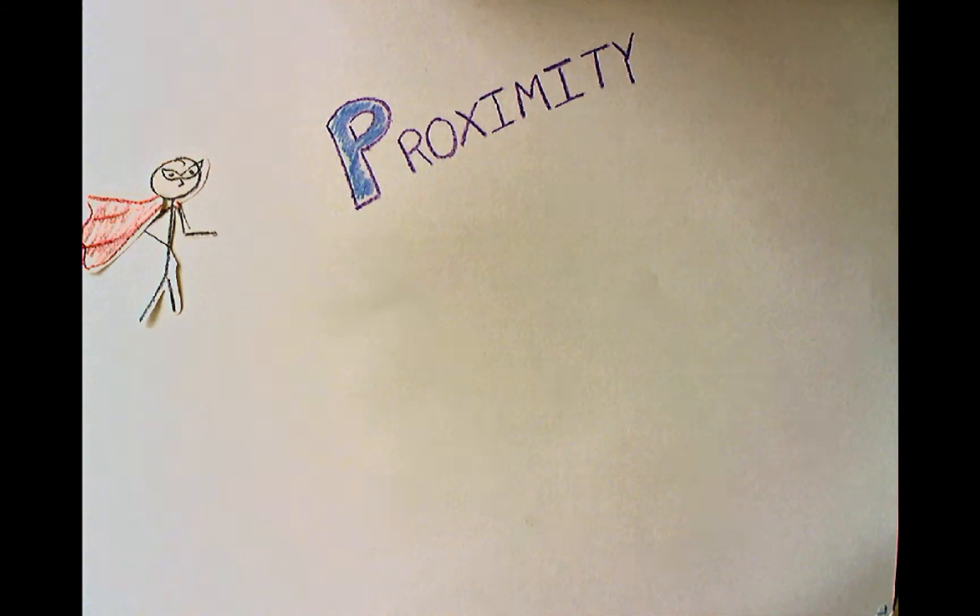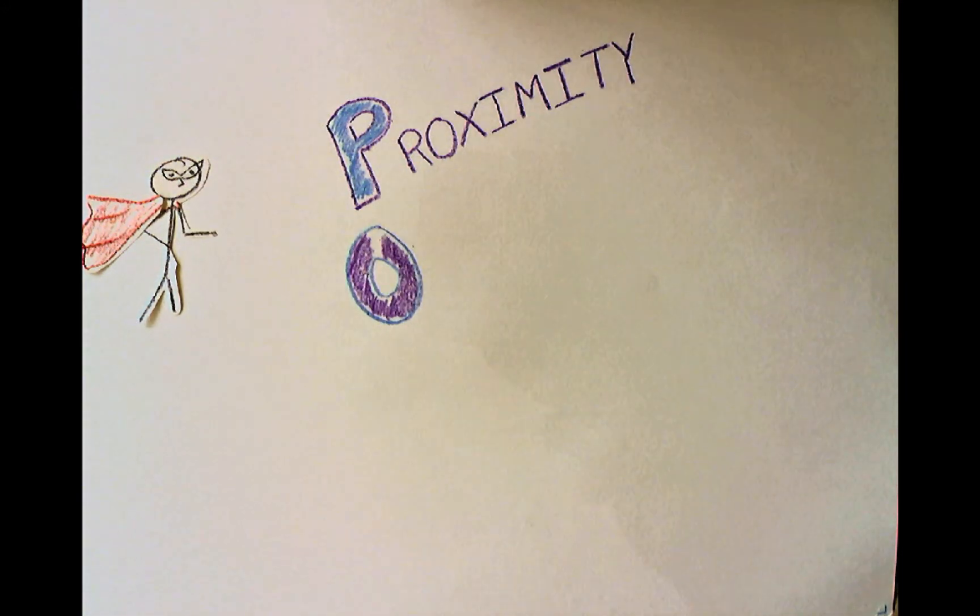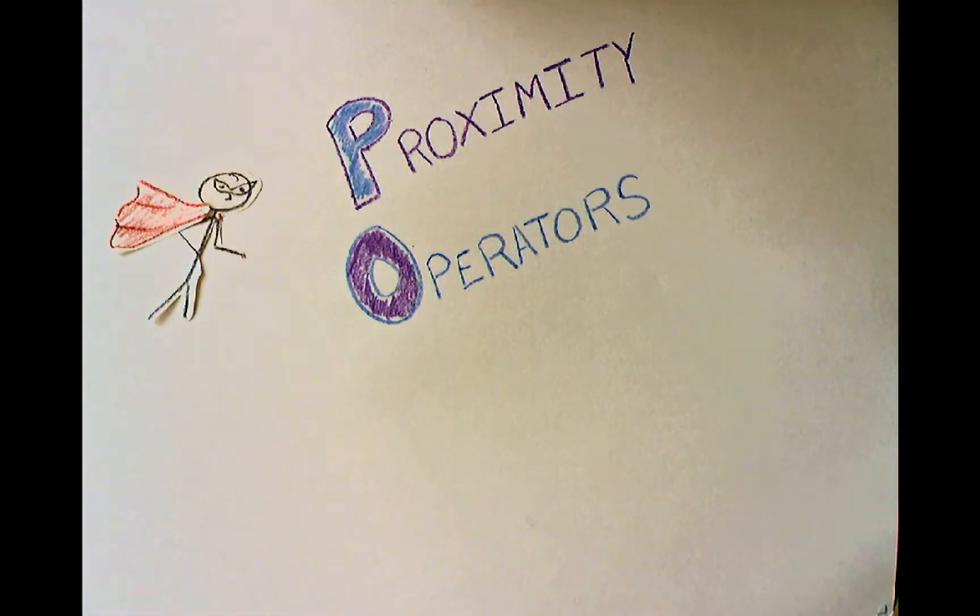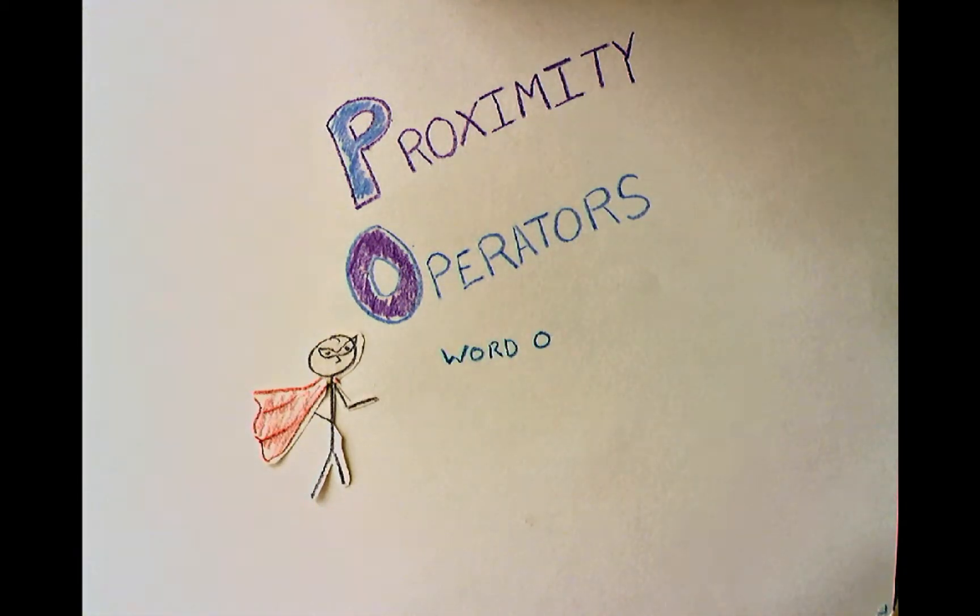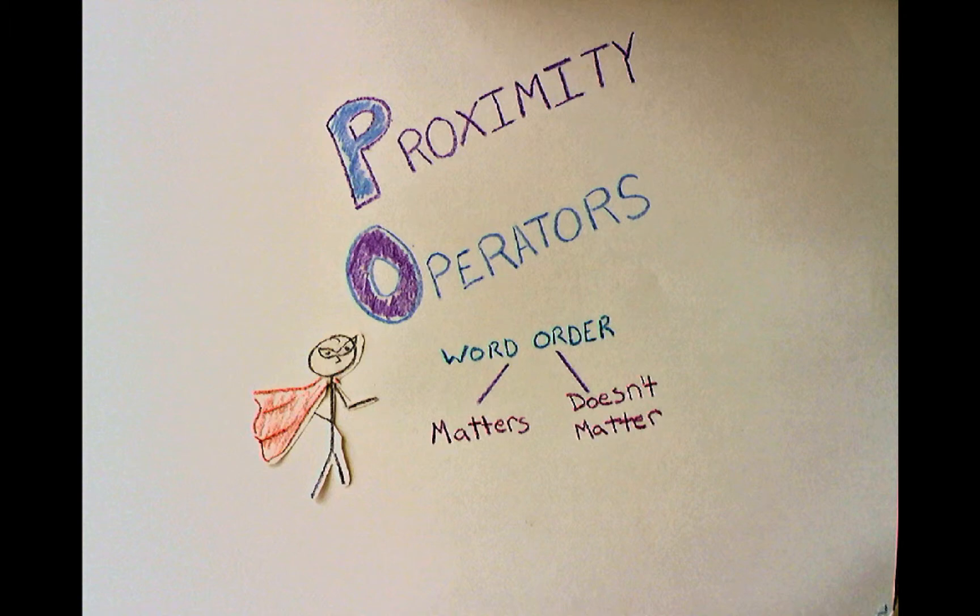Now, your librarian's superpowers really come into play when you start combining your search words and phrases with proximity operators. Proximity operators depend on the specific search system, so expect lots of variations between them. Proximity operators typically enlist some sort of abbreviation telling the search system whether word order does or doesn't matter, along with a number that tells the system how close your words are supposed to be.